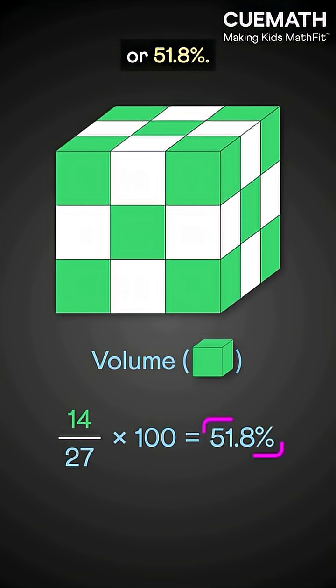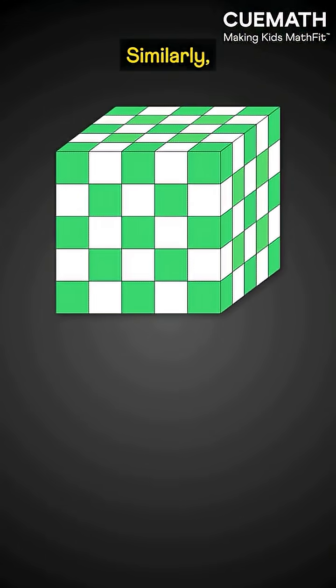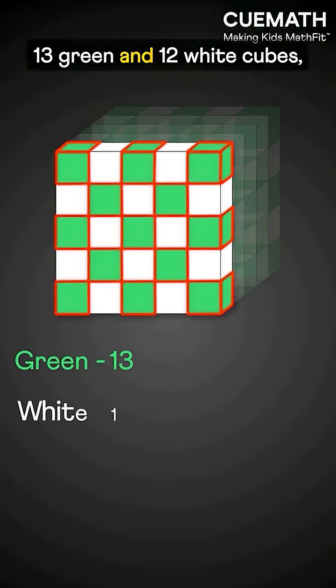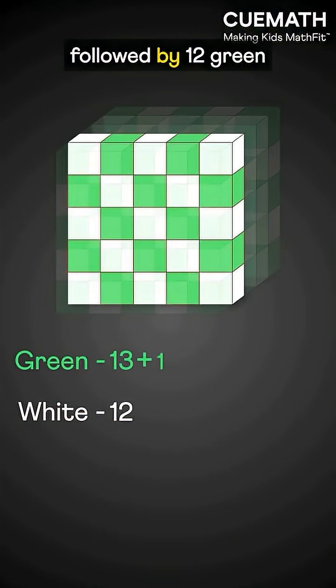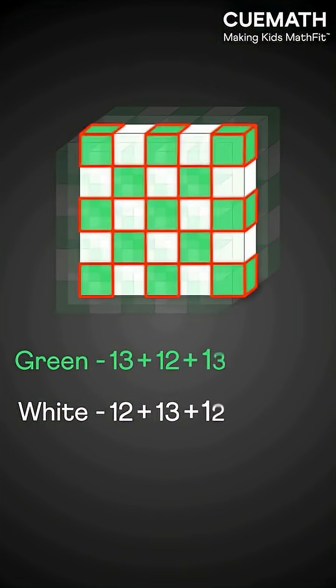Similarly, in the other cube, the first layer has 13 green and 12 white cubes, followed by 12 green and 13 white, and so on.